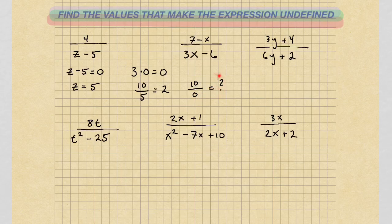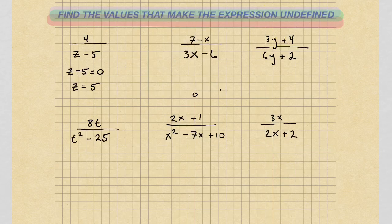So you can't have a 0 in the denominator — that's going to be undefined. There's no number that's going to make this true. So what we do is just set these denominators equal to 0, and that's where the expression is undefined. We go through these expressions, set the denominators equal to 0, and find out where that's true.